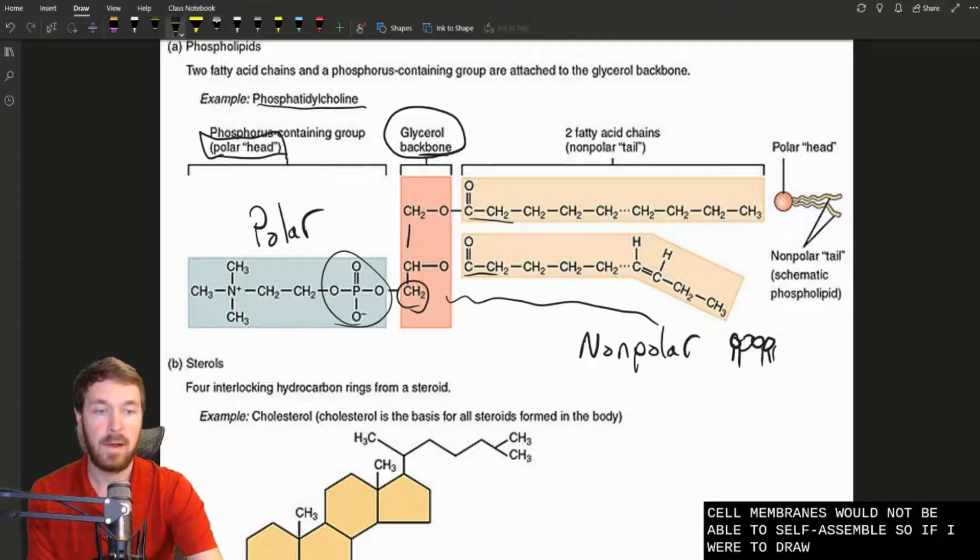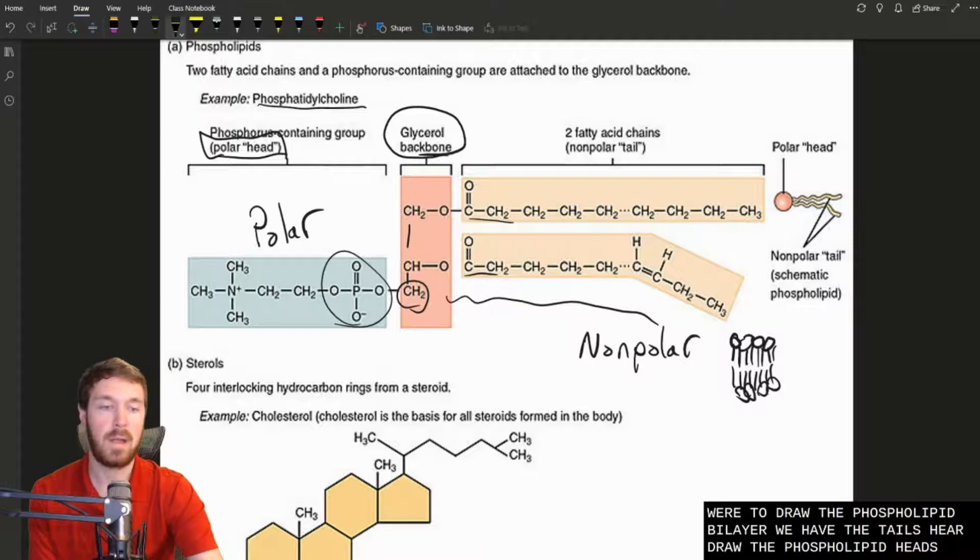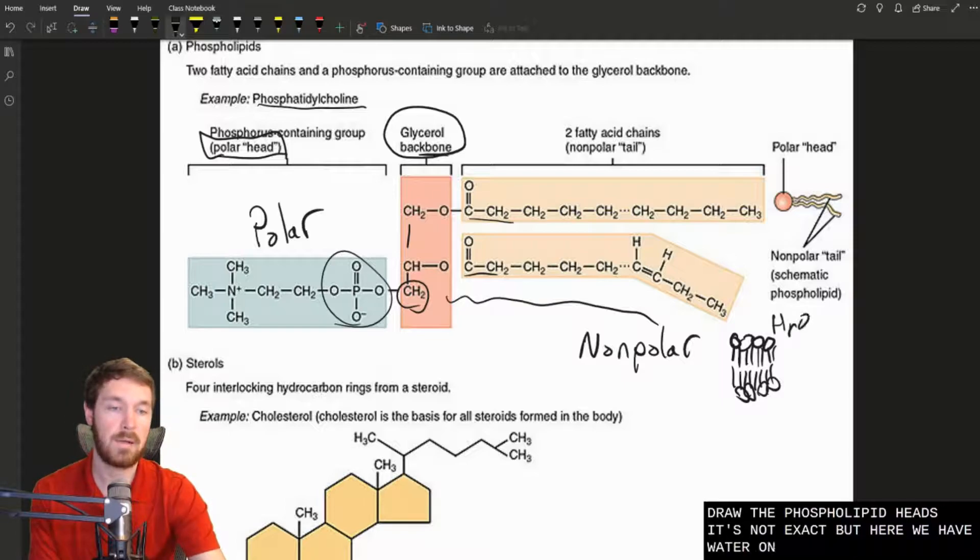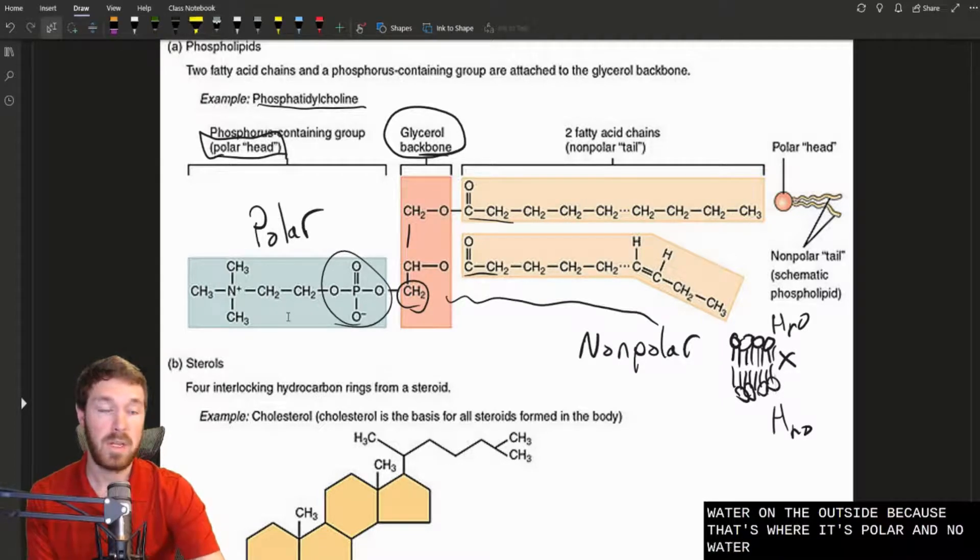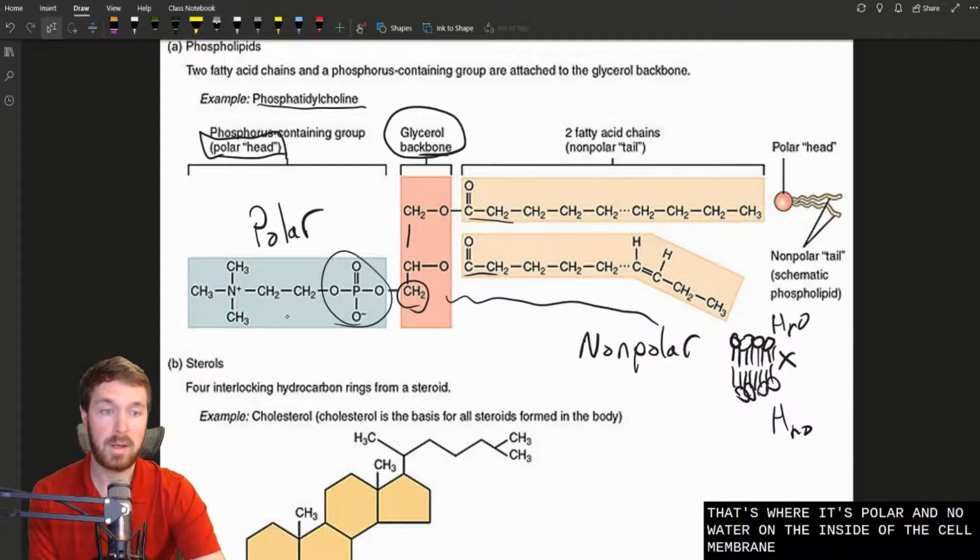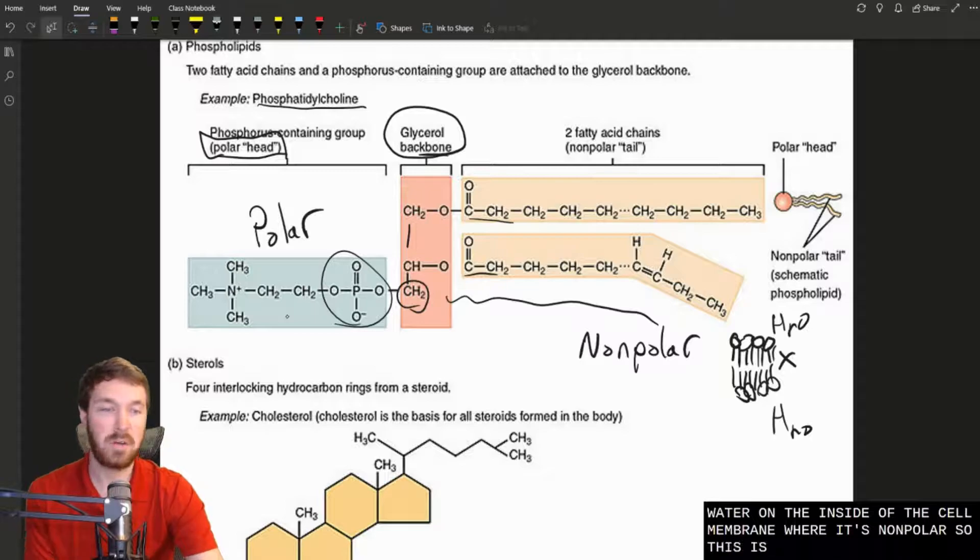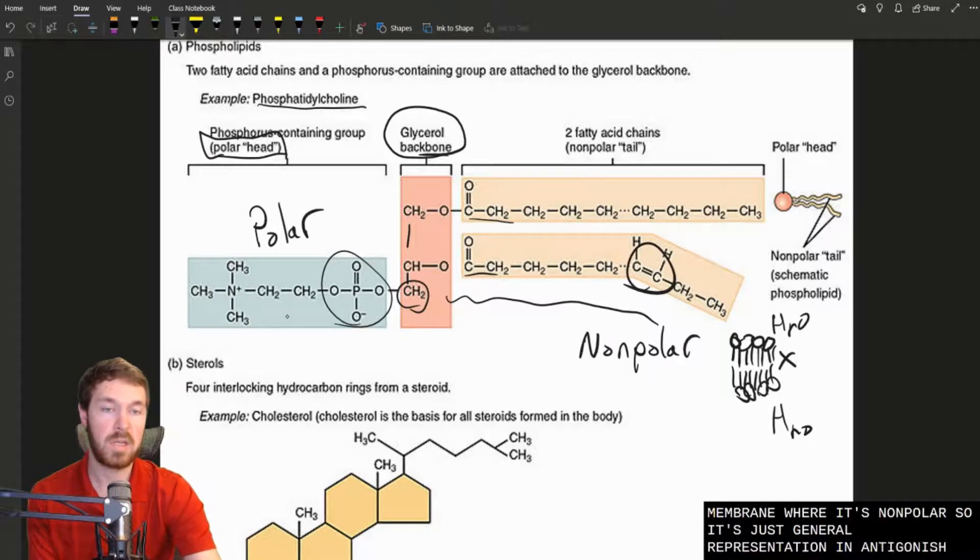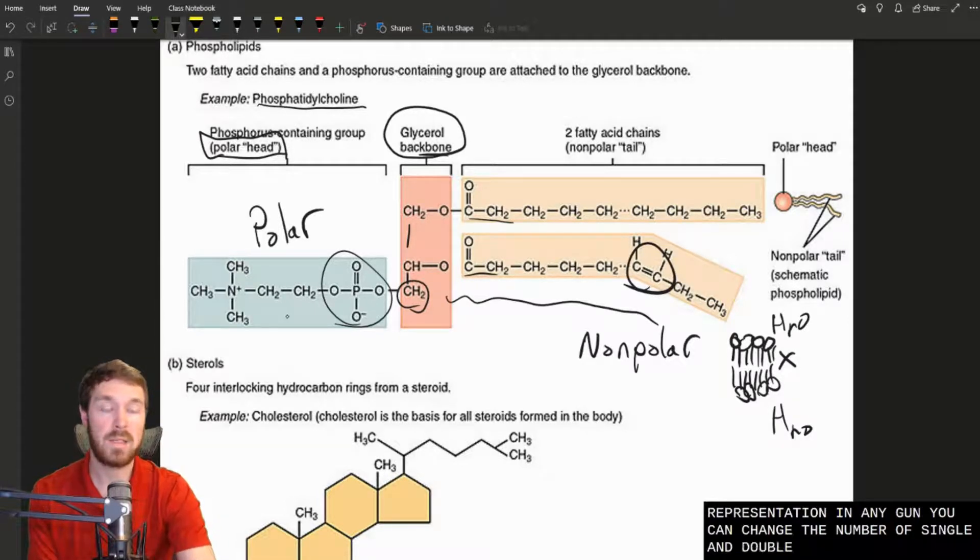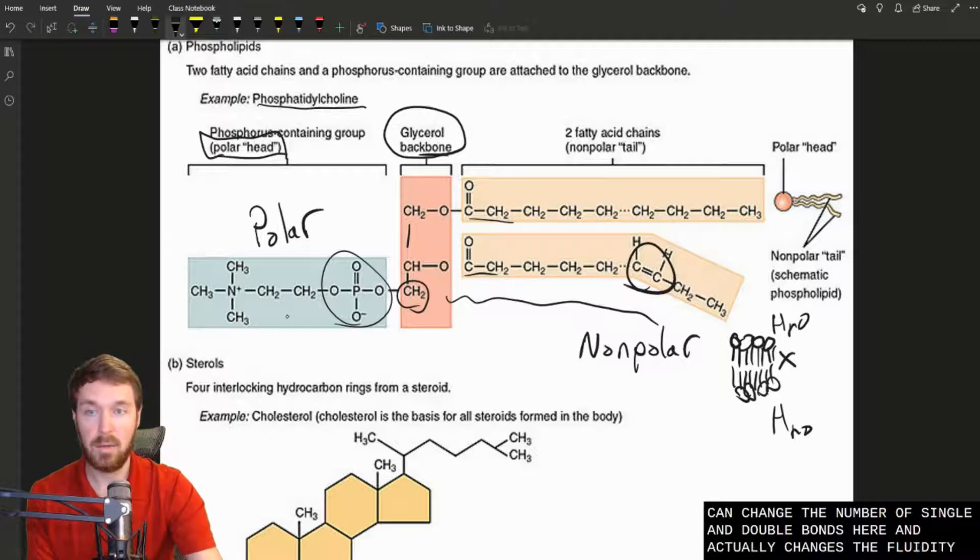Phospholipids are essential in our cell membranes. It's why our cells stay as cells. If we didn't have this amphipathic structure, so there's non-polar and polar regions, our cell membranes would not be able to self-assemble. If I were to draw the phospholipid bilayer, we have the tails here, the phospholipid heads. Here we have water on the outside because that's where it's polar and no water on the inside of the cell membrane where it's non-polar. You can change the number of single and double bonds here and that actually changes the fluidity of the membrane.